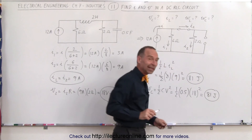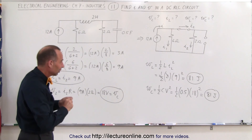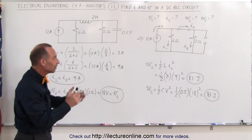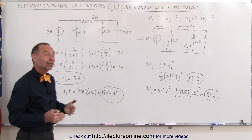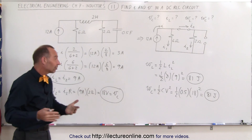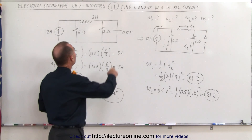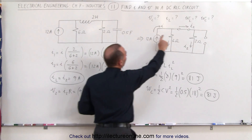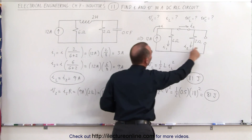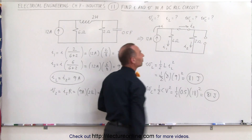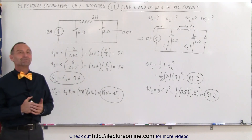It's interesting that the energy stored in the inductor is the same as the energy stored in the capacitor — both 81 joules. The key is that at steady state, the inductor turns into a short and the capacitor turns into an open. And that's how we analyze a circuit like this.